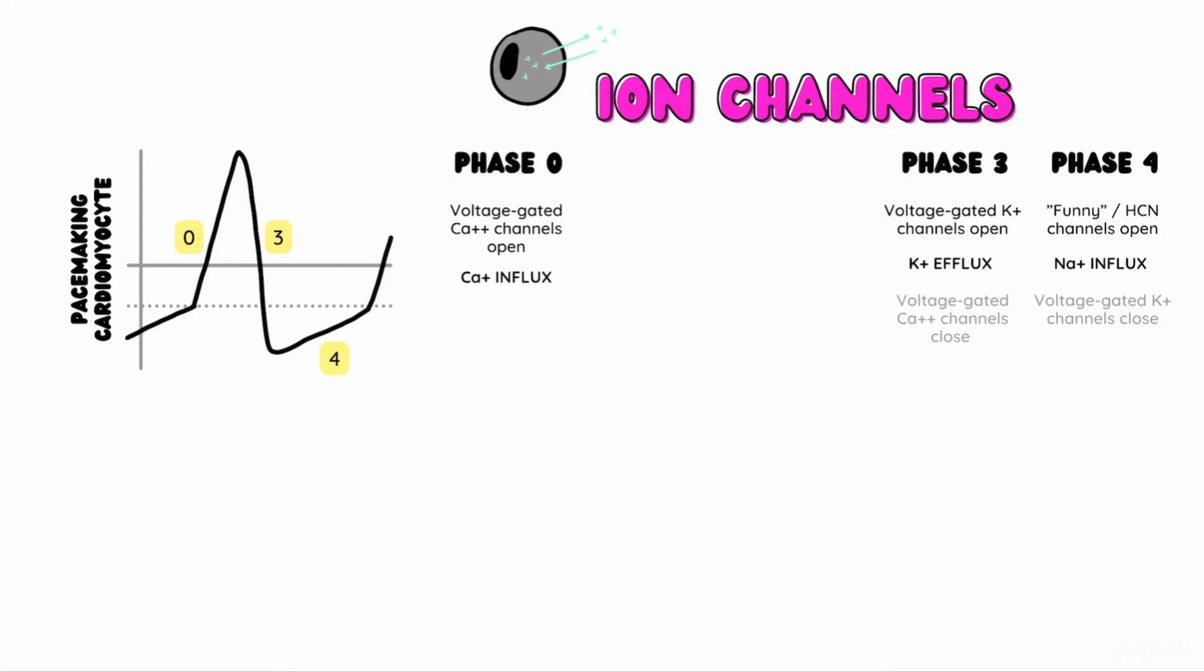These funny channels, also known as HCN channels, allow for influx of sodium into the cell. These channels only open when the cell is hyperpolarized and a membrane potential of negative 50 millivolts.